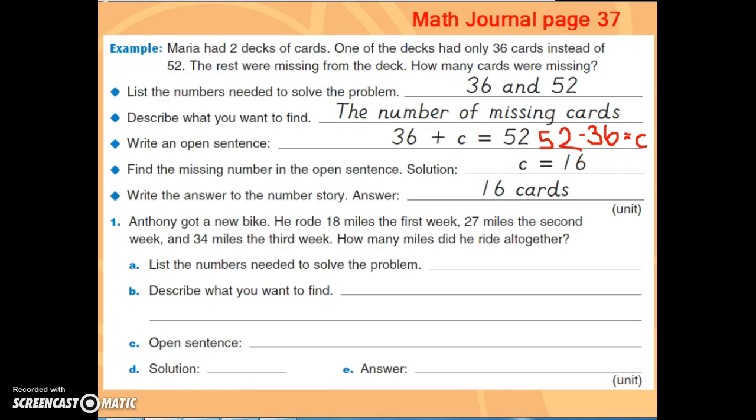So list the numbers that we need to solve this problem. Well, I need to know how many miles he rode each week. So I need to know 18, and I need to know 27, and I need to know 34. So I have my three numbers that I need to solve this problem.